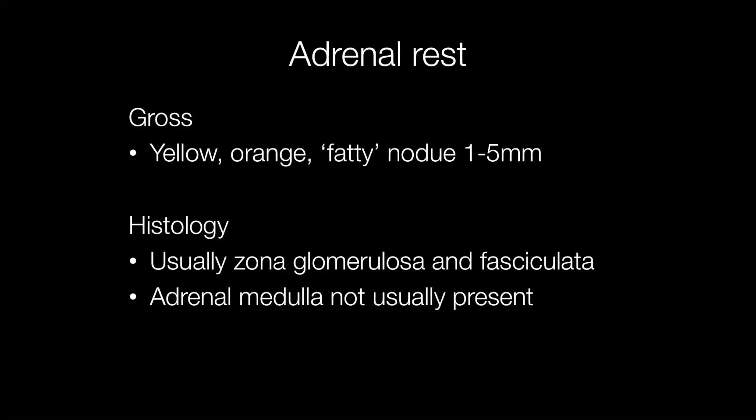Grossly, adrenal rests have the same colouration as an adrenal gland — they are yellow or orange — and the size is normally 1–5mm across. Histologically, adrenal rests are usually composed of the zona glomerulosa and fasciculata, and the adrenal medulla is not usually present.